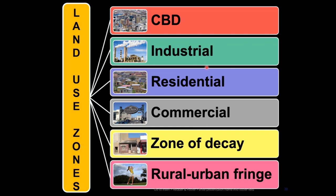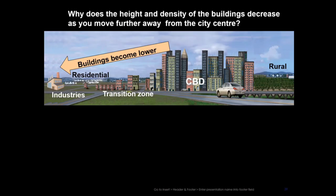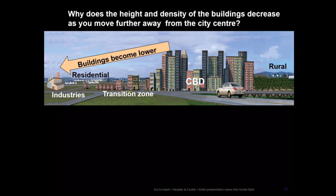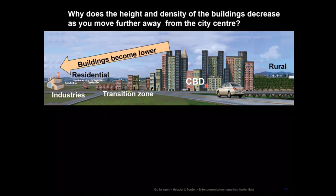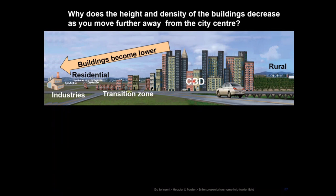The first land-use zone is the CBD. Then we've got the industrial area, residential area, commercial area, zone of decay, and rural-urban fringe. So what does it look like? Let's have a look at this drawing. This is very, very important because indirectly this also affects your question in climatology. They will say to you, why is the temperature much higher here than over here? And this is the link between settlement geography and climatology.